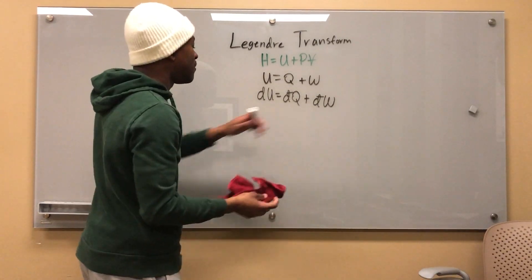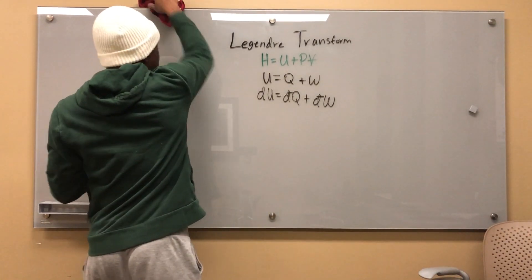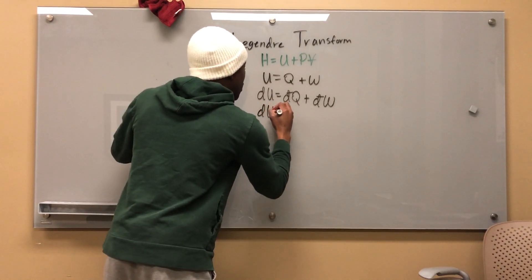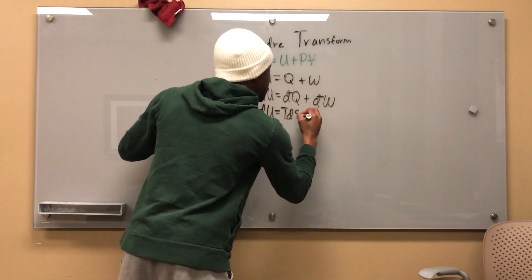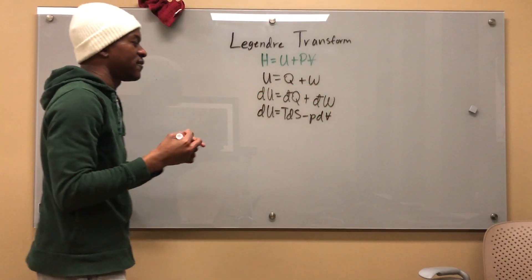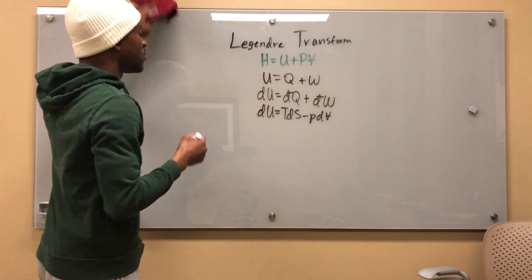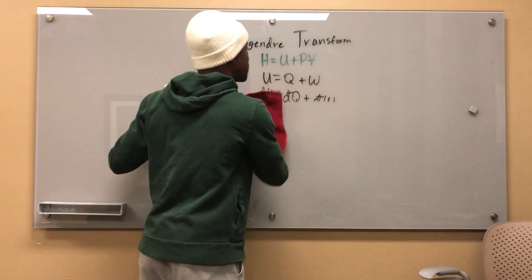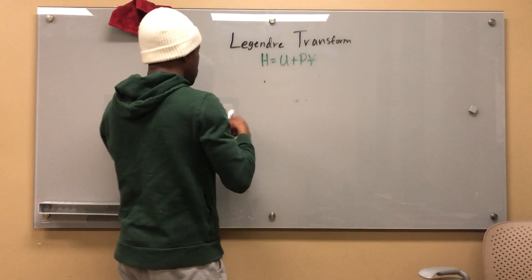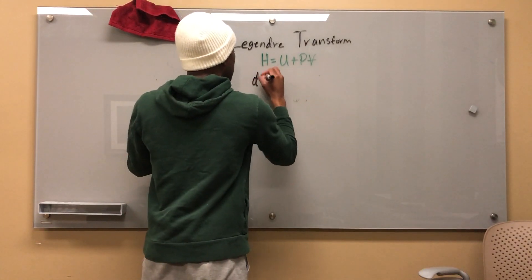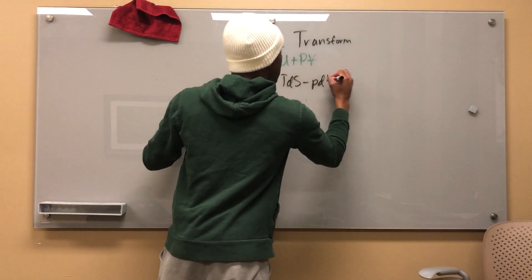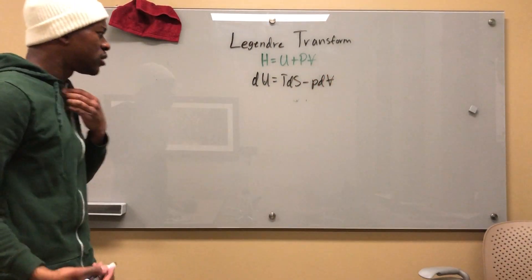But basically, we have this, okay? And this, I'm going to go ahead and say is equal to this. Combining the first and the second law, I can say that dU equals TdS minus PdV, right? Because that work is positive. Now, let me just give myself a little bit of space here. I'm going to go ahead and rewrite that. dU equals TdS minus PdV.